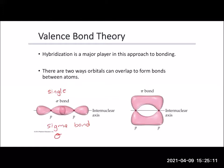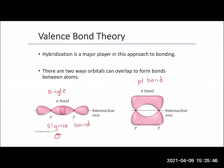There's another way that orbitals can overlap. Instead of being head-on like a sigma bond, they can overlap side to side. If I had two unhybridized p orbitals next to each other, their orbitals would start to overlap on top and on bottom of the internuclear axis — that's where the two nuclei of the atoms are. That's what we call a pi bond, and it's still a pair of electrons shared. Whether it's a sigma bond with head-on overlap or a pi bond with side overlap, there's still some overlap and sharing of electrons.